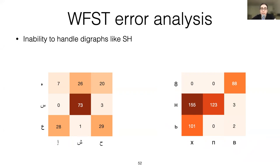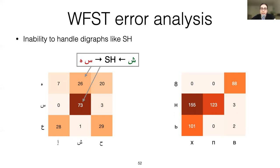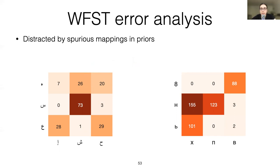Another type of error is inability to handle digraphs — for example, instead of decoding 'sh' into one character, it decodes 's' and 'h' separately. This is probably due to a weak n-gram language model, since we'd expect the language model to downweight unlikely native script bigrams. Some confusion is also caused by noise in the priors — for instance, the model incorrectly deciphers Latin 'X' as the Russian soft sign, which indicates palatalization. This happens because X and soft sign were randomly mapped to the same key in one phonetic keyboard layout, despite having no phonetic correspondence, but we biased our model toward learning this mapping.